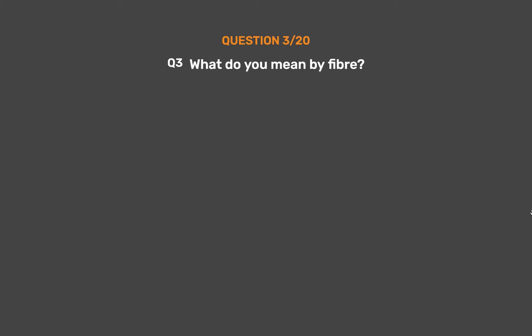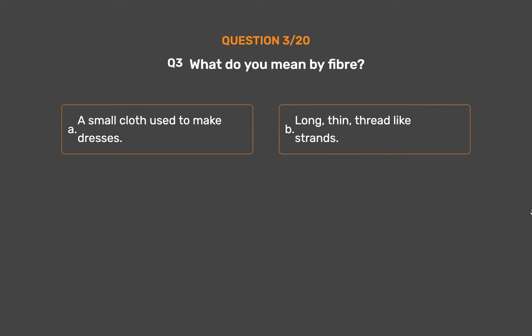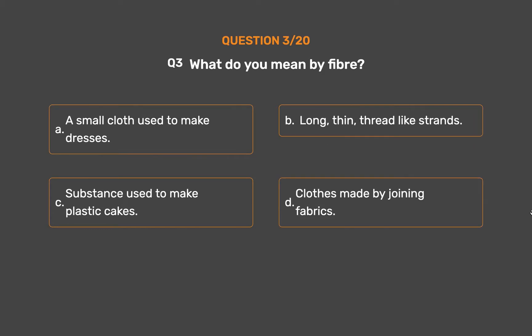Question number 3. What do you mean by fiber? Option A, A small cloth used to make dresses; Option B, Long, thin, thread-like strands; Option C, Substance used to make plastic; Option D, Clothes made by joining fabrics.